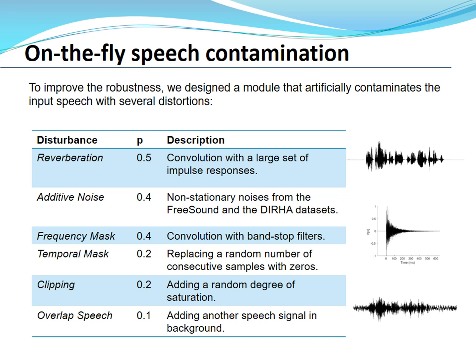On-the-fly speech contamination: instead of feeding the encoder directly with a clean signal as in PACE, we feed our encoder with contaminated speech generated on-the-fly. We add disturbances with a certain probability, including reverberation performed by convolution with a large set of impulse responses, additive noise using the FreeSound and DEMAND datasets, frequency masking and temporal masking similar to SpecAugment but implemented in the time domain, clipping which introduces random saturation, and signals with overlapping speech.